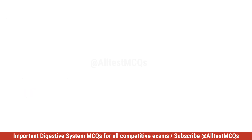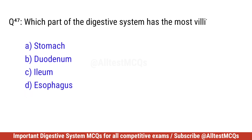Question number forty-seven. Which part of the digestive system has the most villi? Right option is C. Ileum.